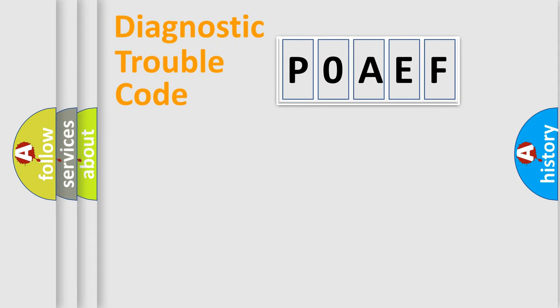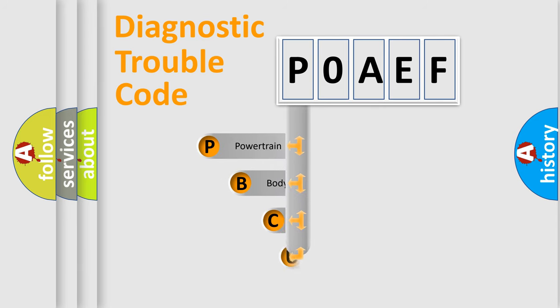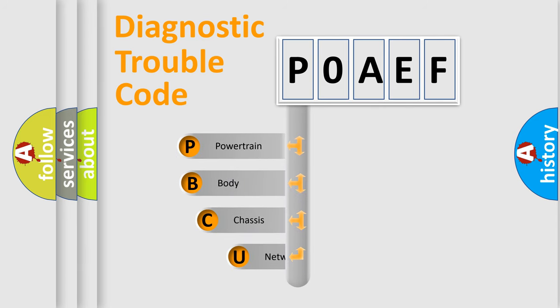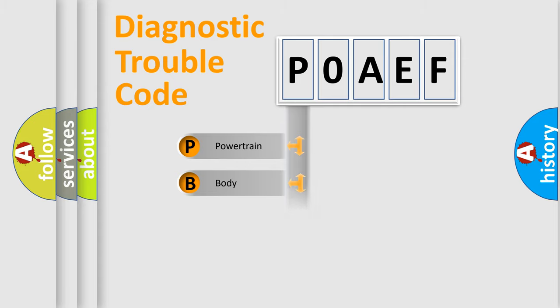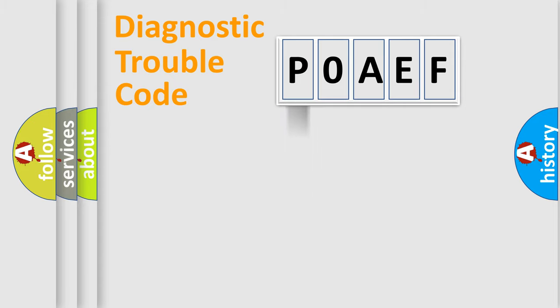First, let's look at the history of diagnostic fault code composition according to the OBD2 protocol, which is unified for all automakers since 2000. We divide the electric system of an automobile into four basic units: Powertrain, Body, Chassis, and Network.